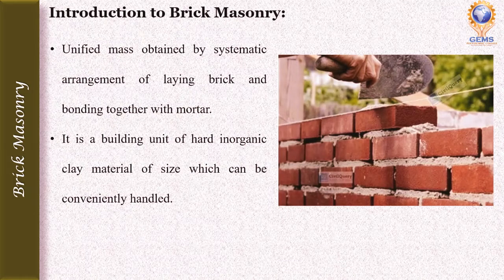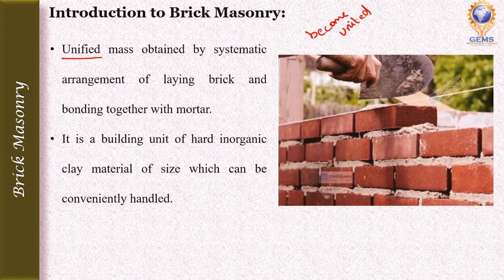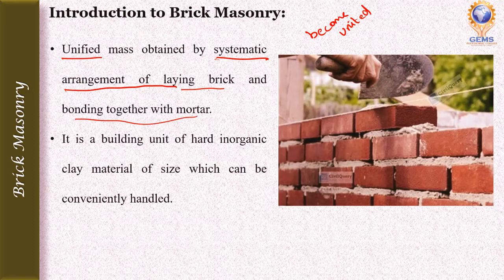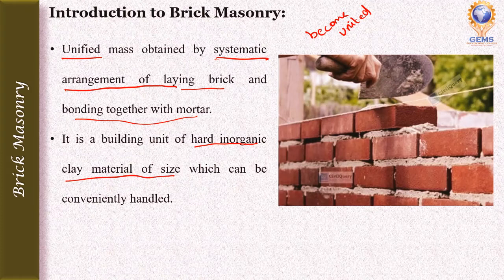Brick masonry is a unified mass — unified mass means it acts as one unit. Brick masonry is a unified mass obtained by the systematic arrangement of laying bricks bonded together with the help of mortar. A brick is a building unit of hard inorganic clay material, of a size which can be conveniently handled.